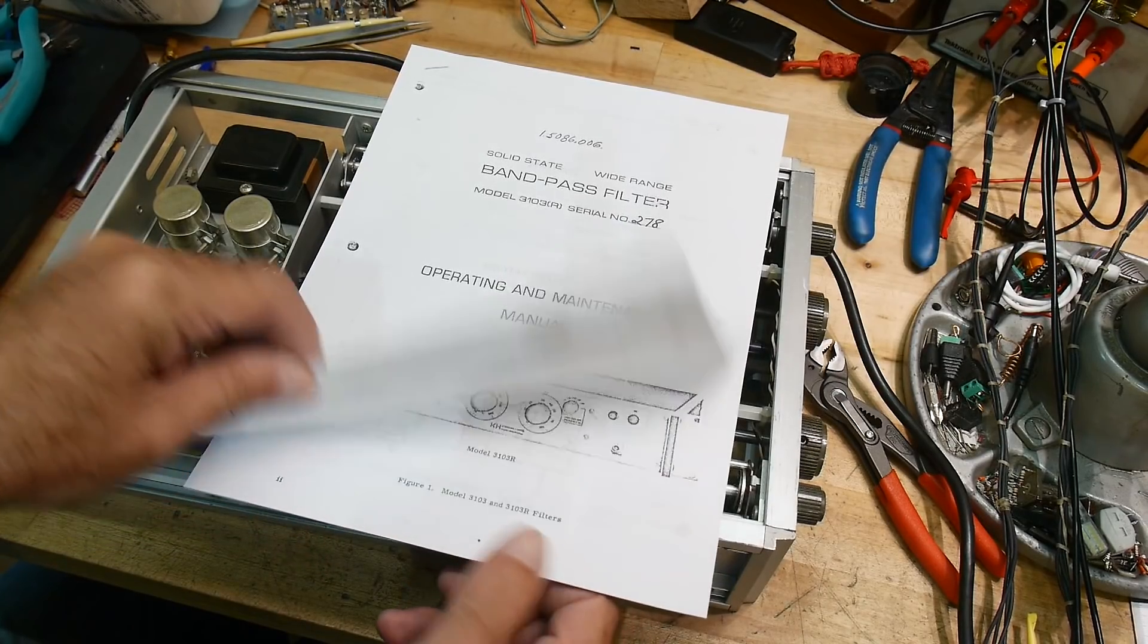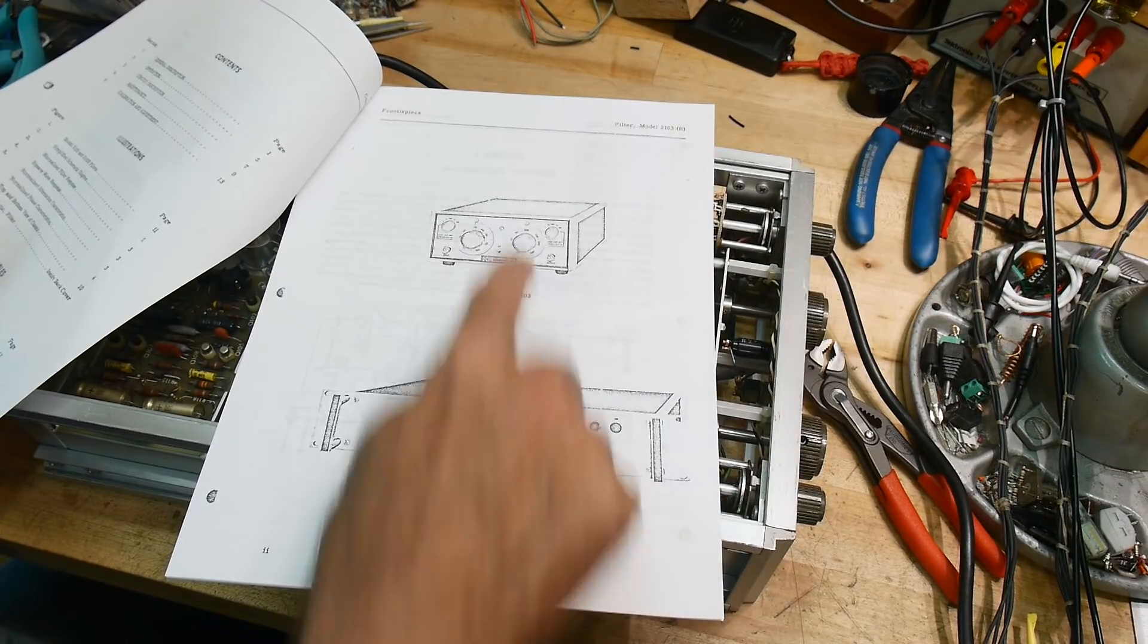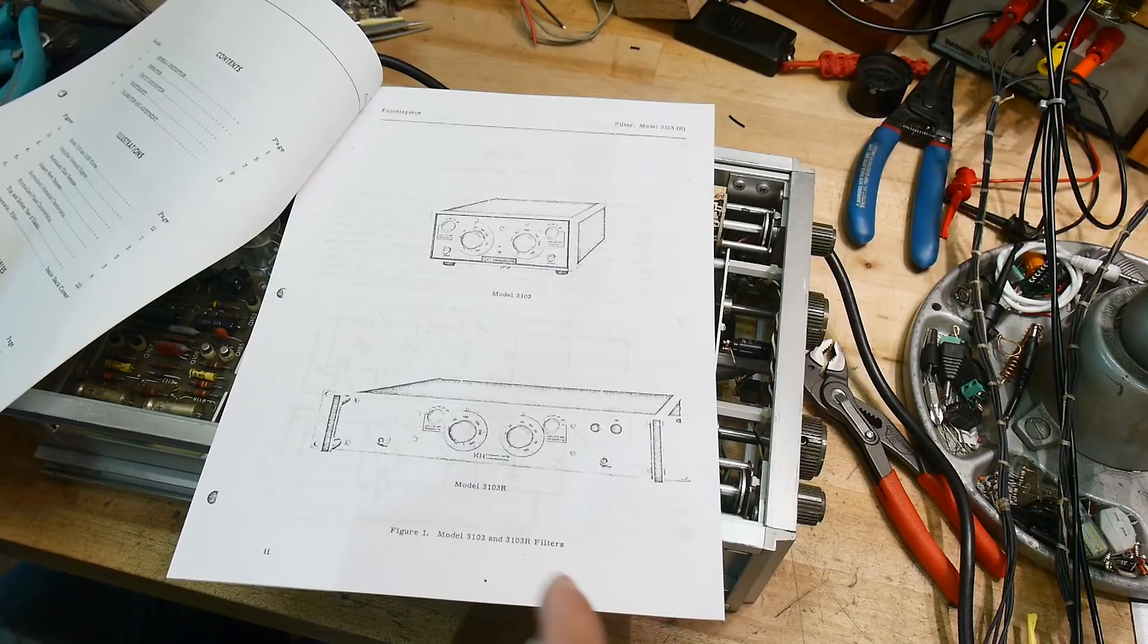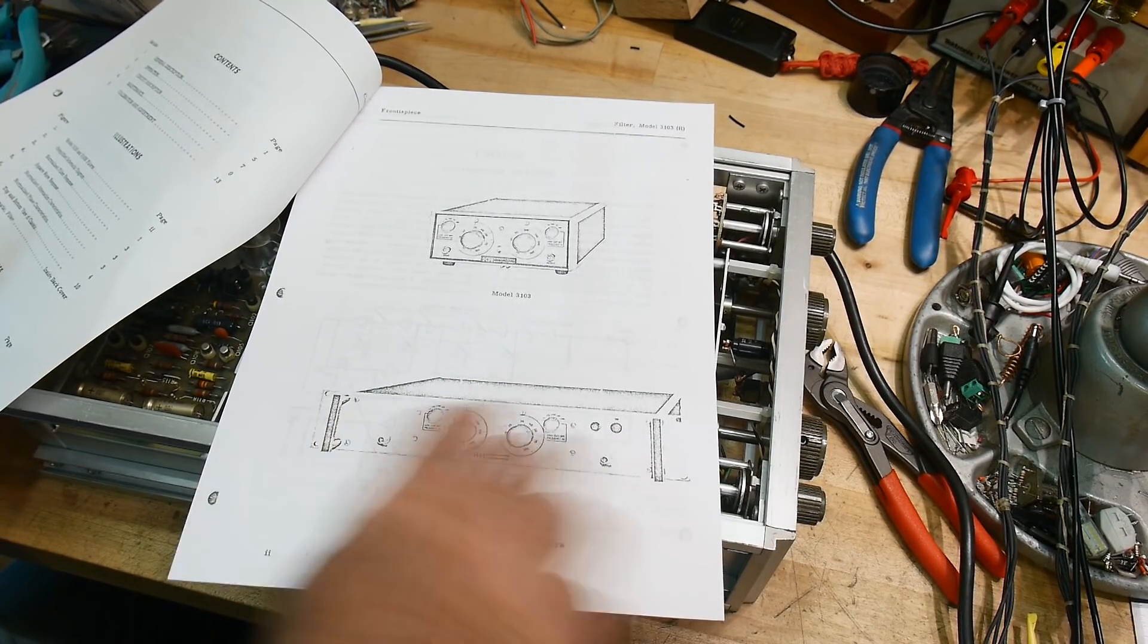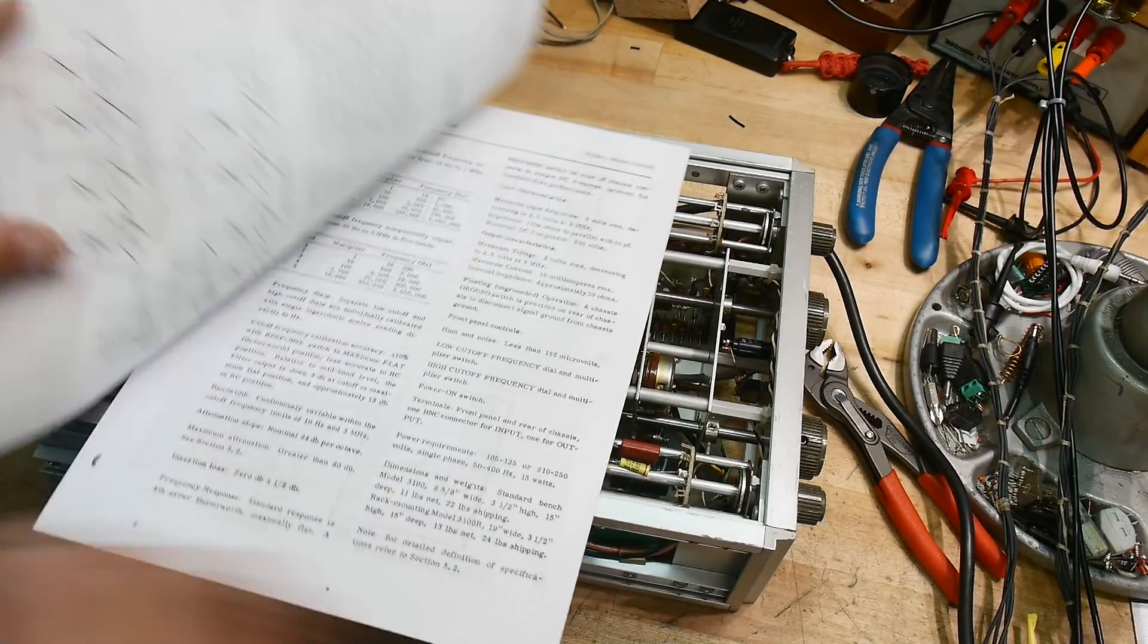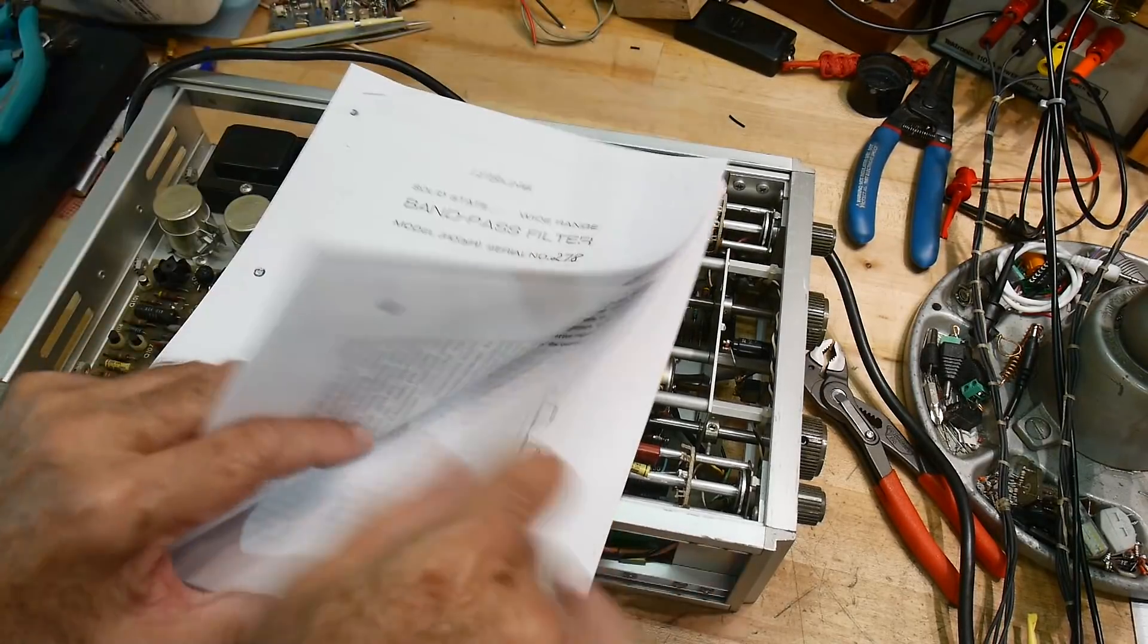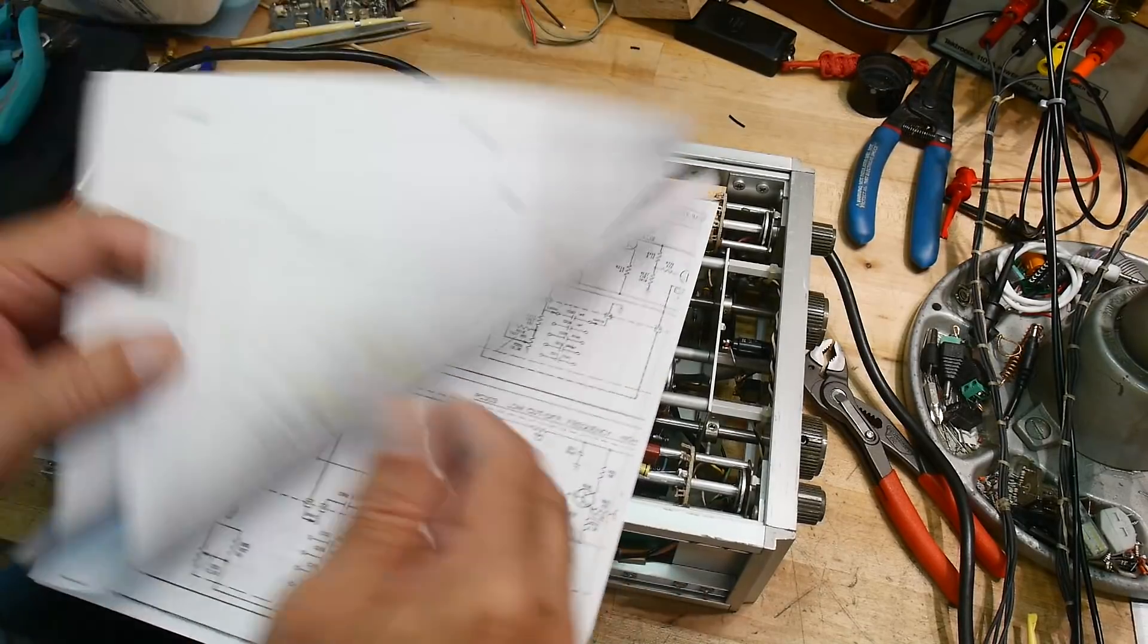Nice place. Been there. Let's see. This is the one we have, the 3103. This is the 3103 R rack mount version. That's what the R stands for. And this is how it works. This is all the cool things. This is how to do maintenance on it. Oh, here we go. Schematics in the back.